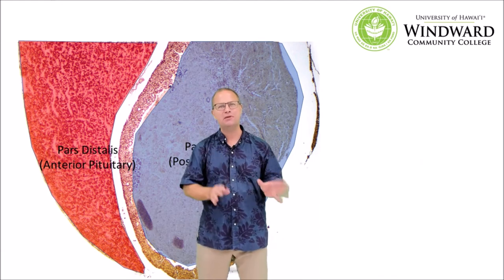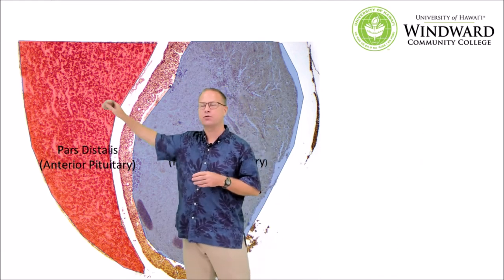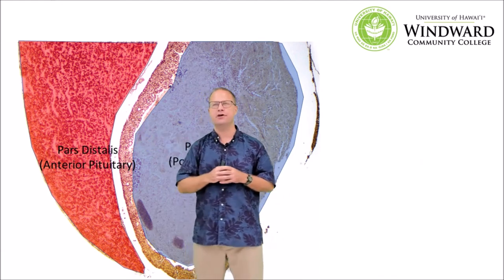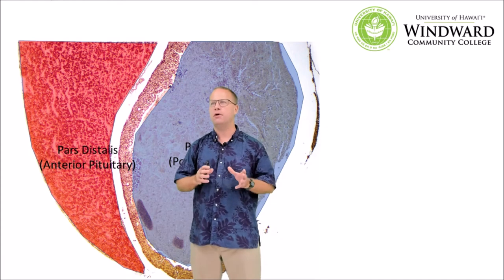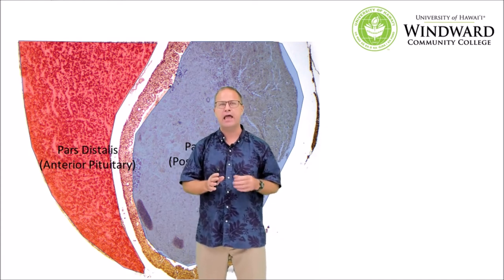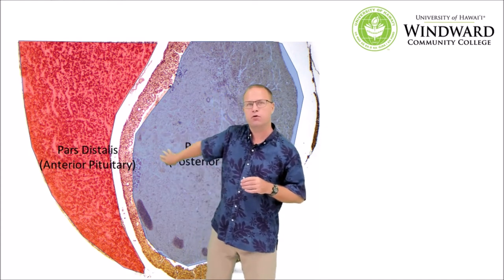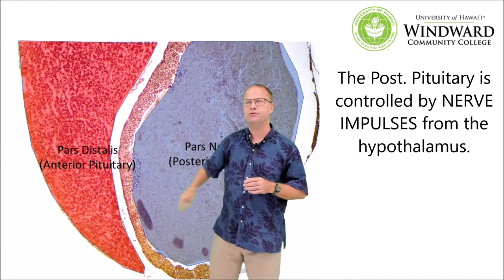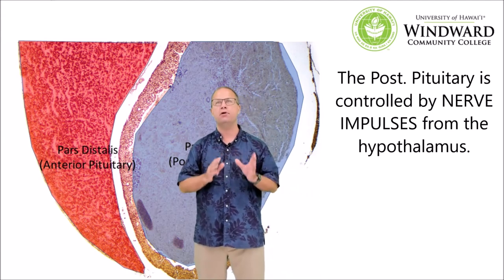So the big picture here is that the pars distalis, or anterior pituitary, is controlled by releasing hormones secreted by the hypothalamus. In contrast, the pars nervosa, or posterior pituitary, is controlled by nerve impulses from the hypothalamus.